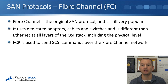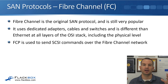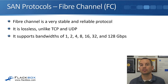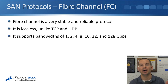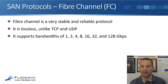When we're using Fibre Channel, it uses FCP — the Fibre Channel Protocol — and that's used to send SCSI commands over the Fibre Channel network. It's the SCSI commands that are controlling the reads and writes going to the disk at the low level. One of the reasons that Fibre Channel is still used a lot today is it's a very stable and reliable protocol. It's lossless, unlike TCP and UDP, which are used to run over our Ethernet networks.